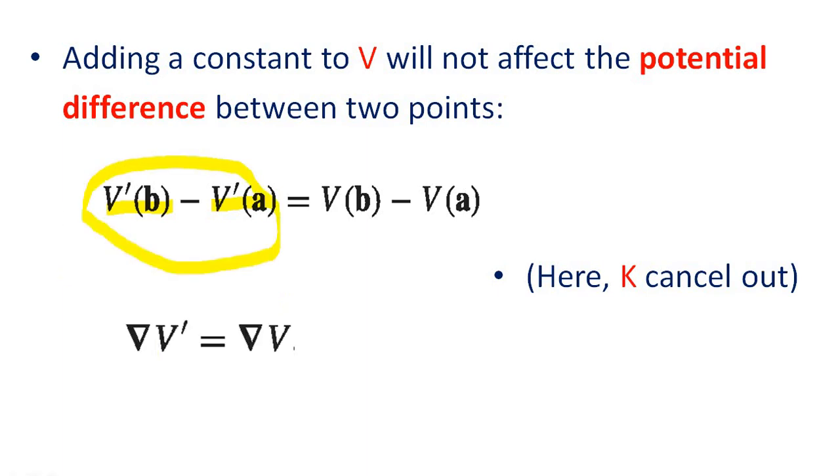First term LHS, we can call it as grad V prime, del V prime. Similarly, RHS is del V. So, grad V prime equal to grad V.